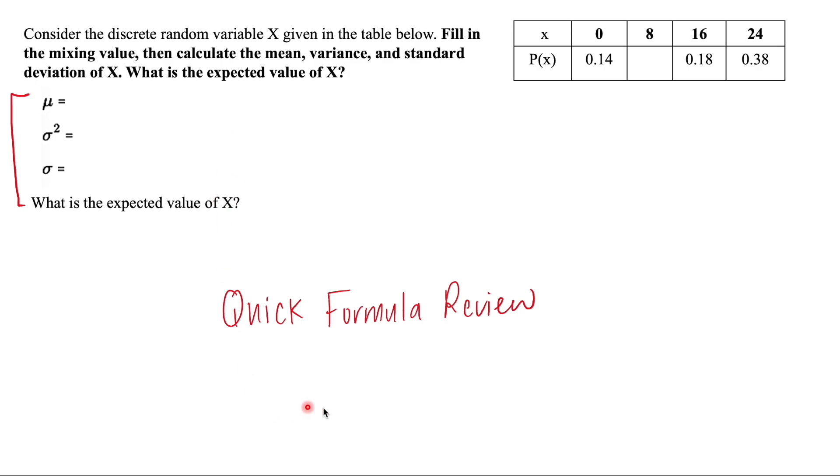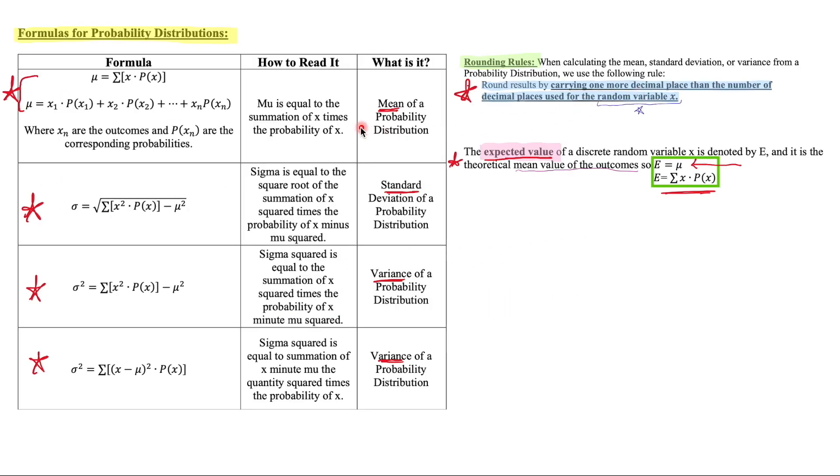Before we get started, let's do a quick formula review and remind ourselves of the rounding rules for a probability distribution. In this diagram here, it shows the formula, how we would read it. So for example, how we would pronounce these symbols. This is a mu, right, a mu. And then it displays what it is.